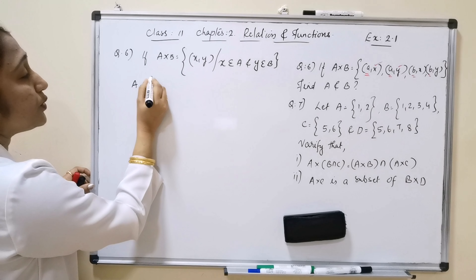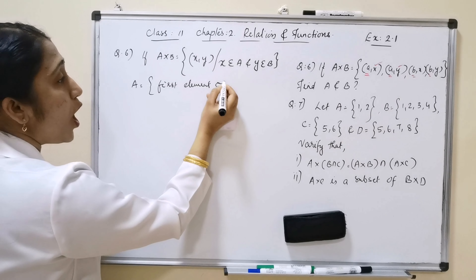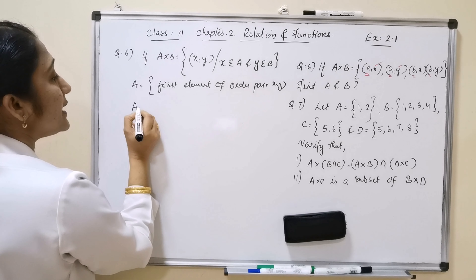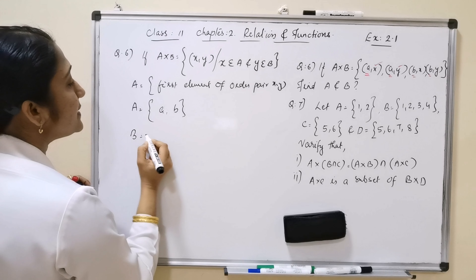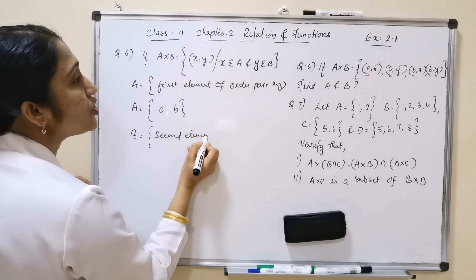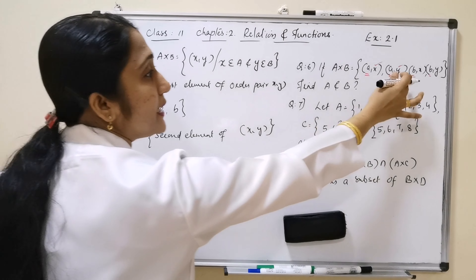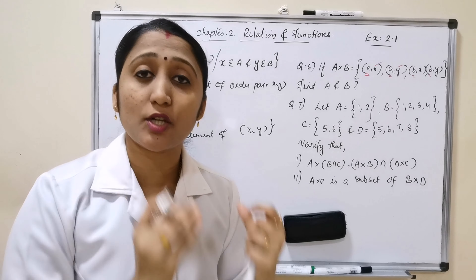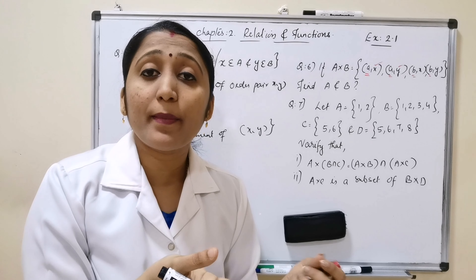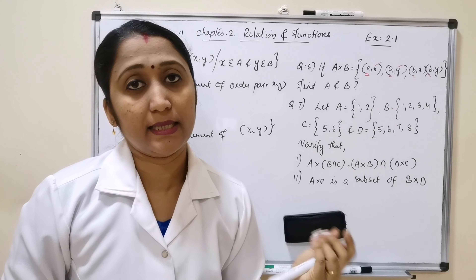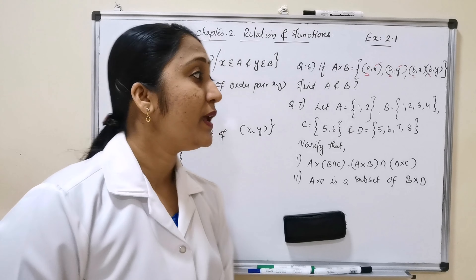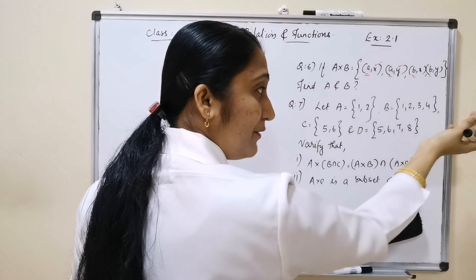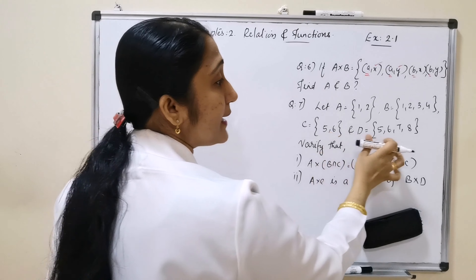Looking at A cross B here, the first elements are a, a, b, b and the second elements are x, y, x, y. So we can conclude that set A equals the collection of first elements: A = {a, b}, and set B equals the collection of second elements: B = {x, y}. It is very easy and simple — for any given Cartesian product, first elements form set A and second elements form set B.